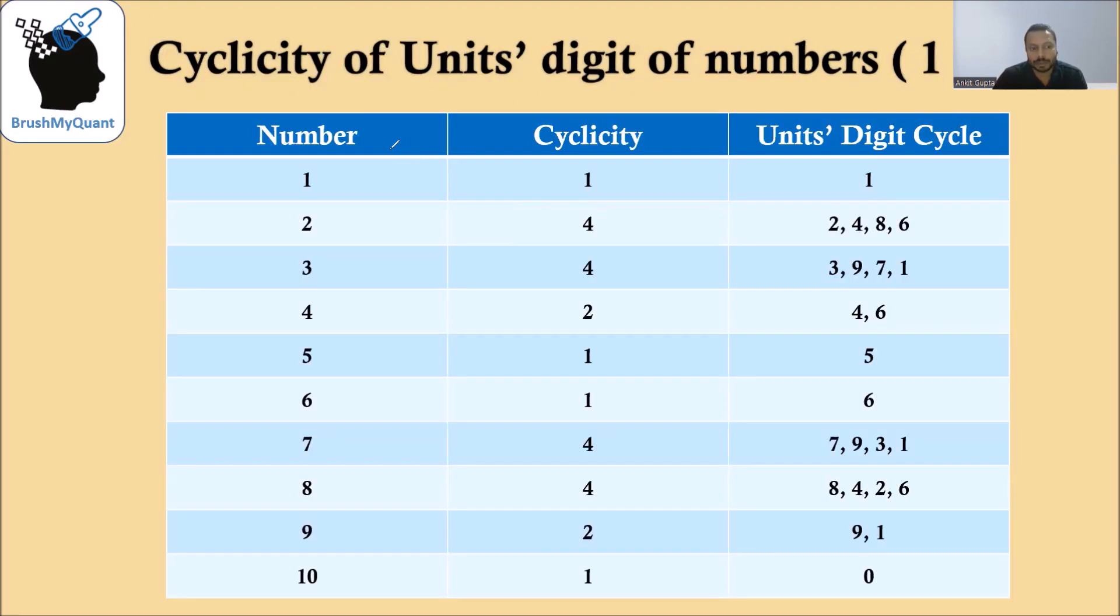I have also listed down the cyclicity of all the numbers from 1 to 10. What is their overall cyclicity? Do they repeat after every term, after every 4 terms? And what is the exact cycle? So you can remember this so it becomes easier for you to solve the problems involving units digit of exponents.